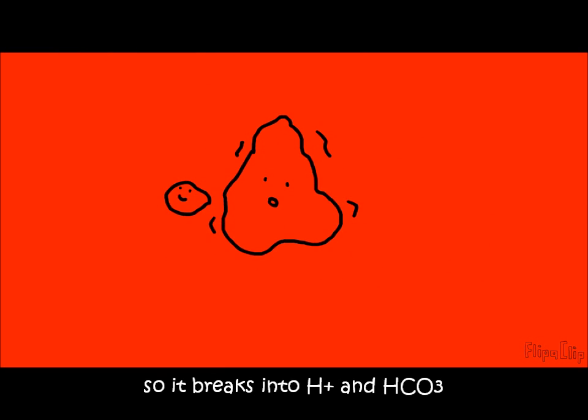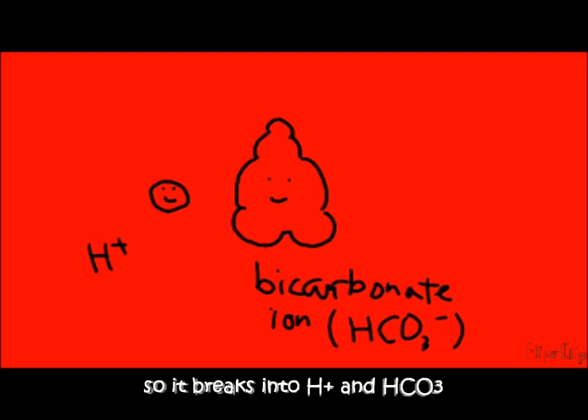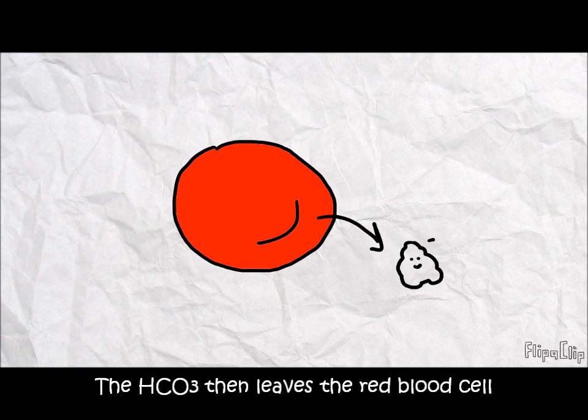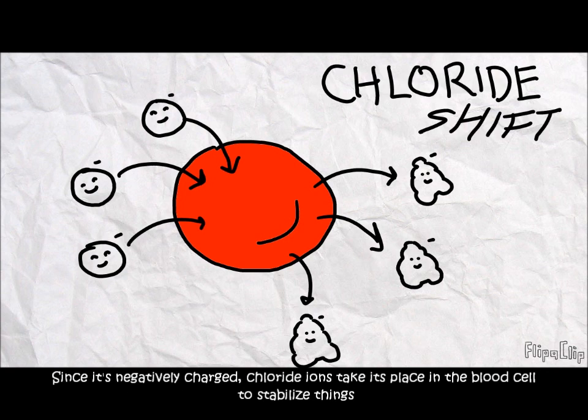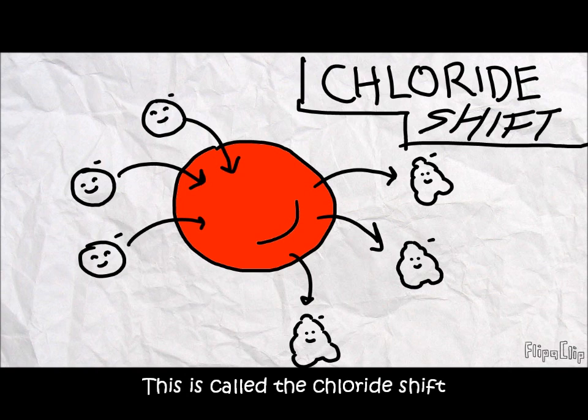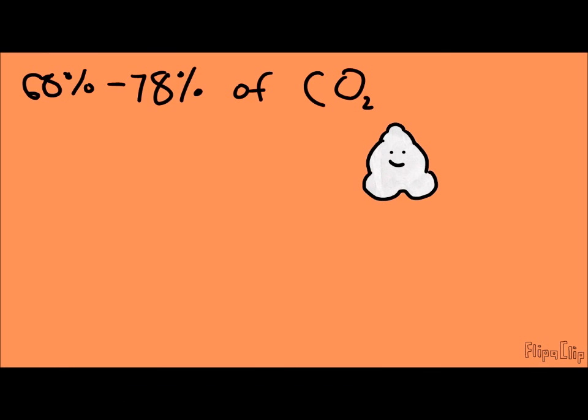But carbonic acid is very unstable, so it breaks into hydrogen bicarbonate ions. The bicarbonate then leaves the red blood cell, and since it's negatively charged, chloride ions from the outside take its place within the blood cell to stabilize things. This is called a chloride shift.